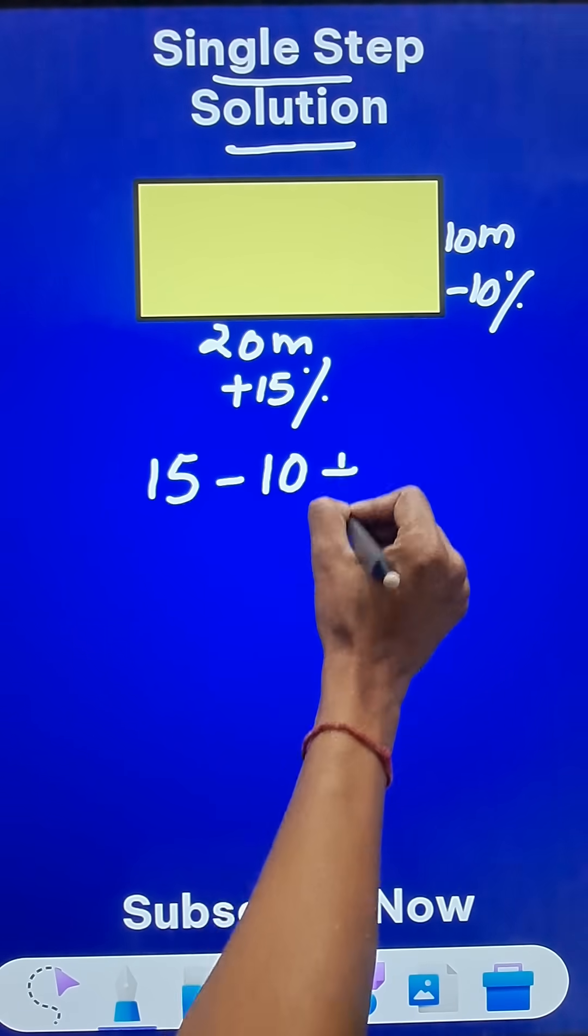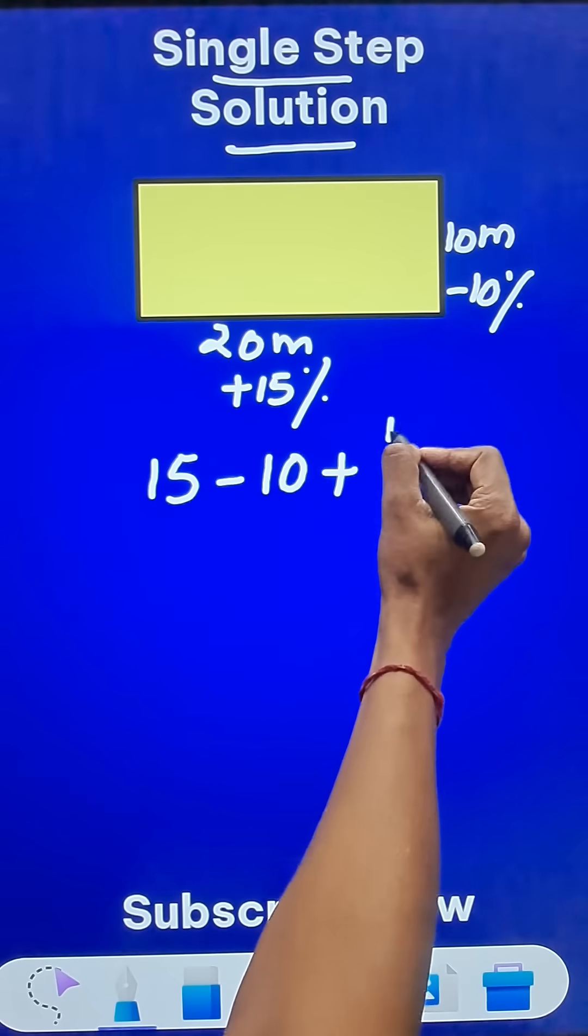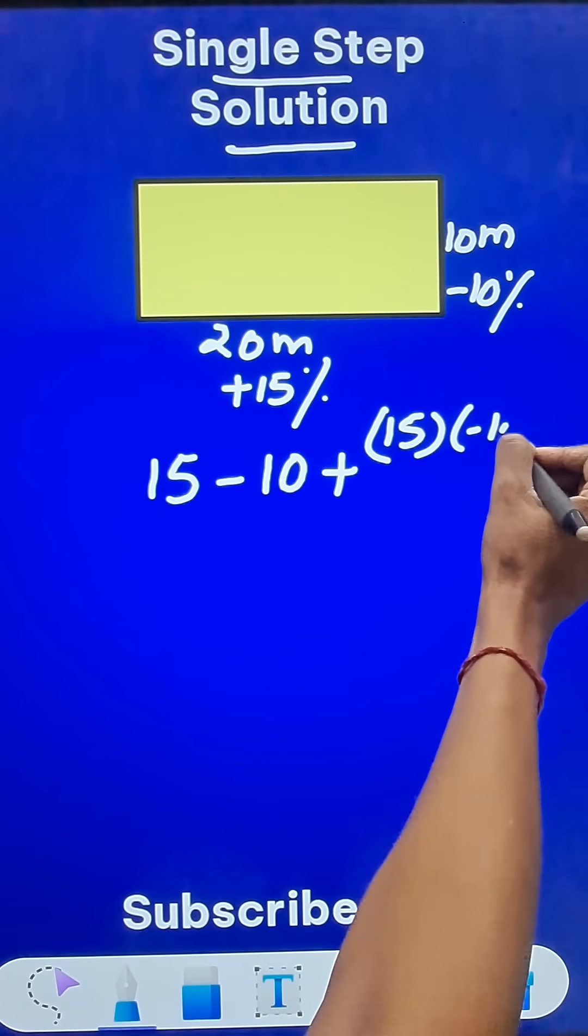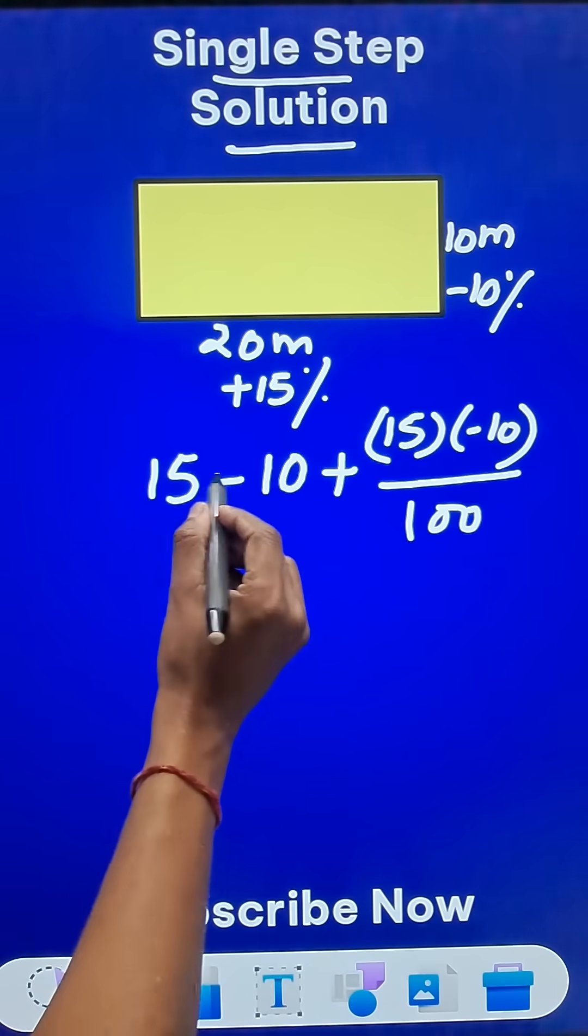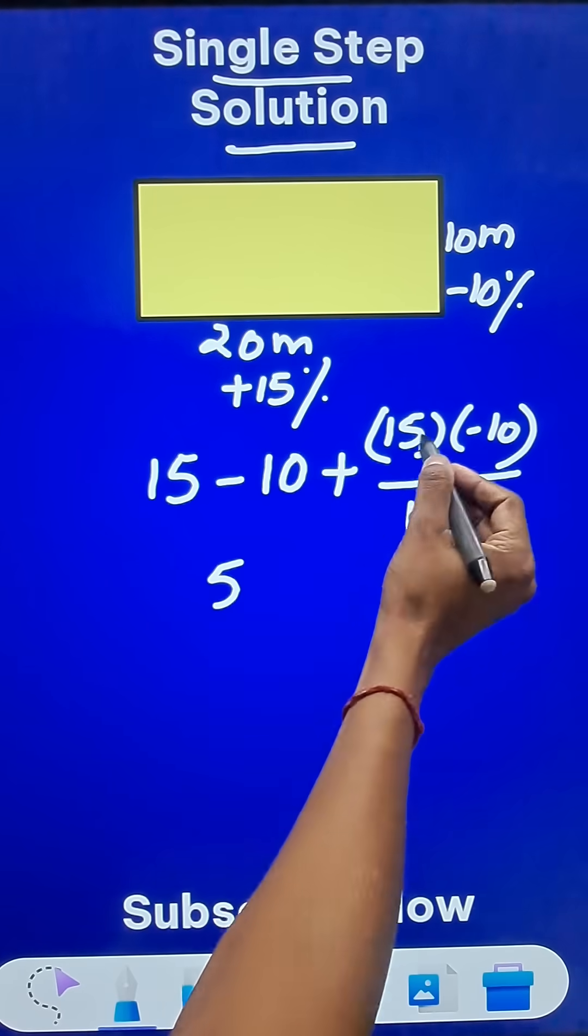And then add the product of these two, like 15 times minus 10 and divide it by 100. Now what do you get here? 15 minus 10 is 5 and then plus minus is minus, 150 upon 100 is 3 by 2 which is 1.5.